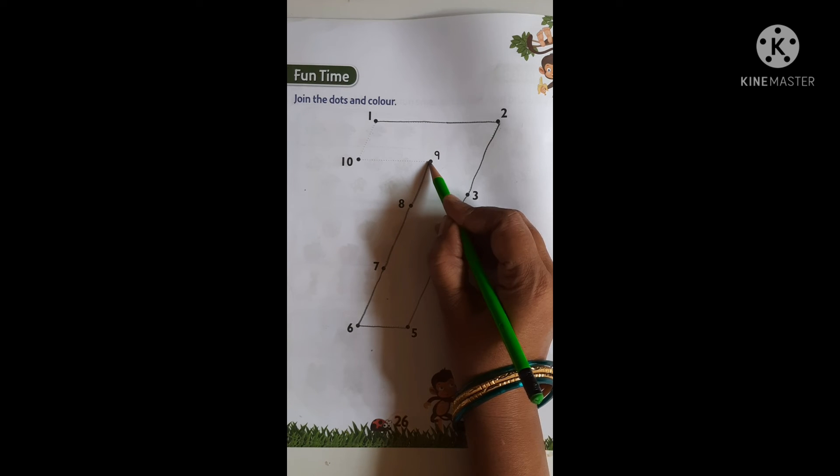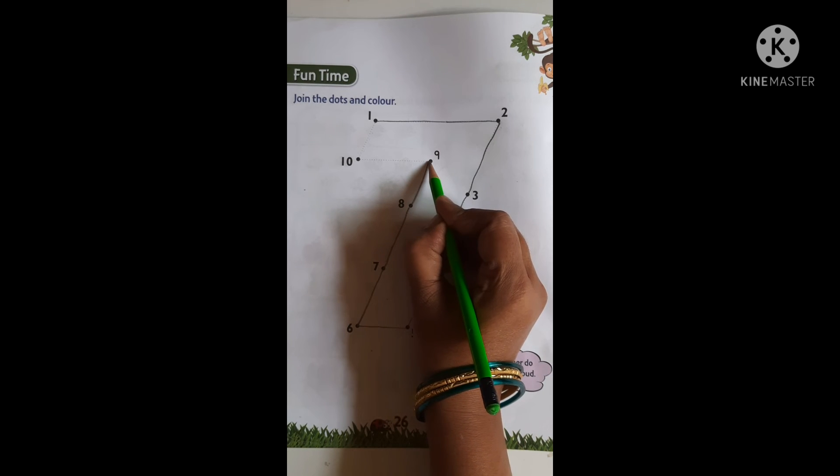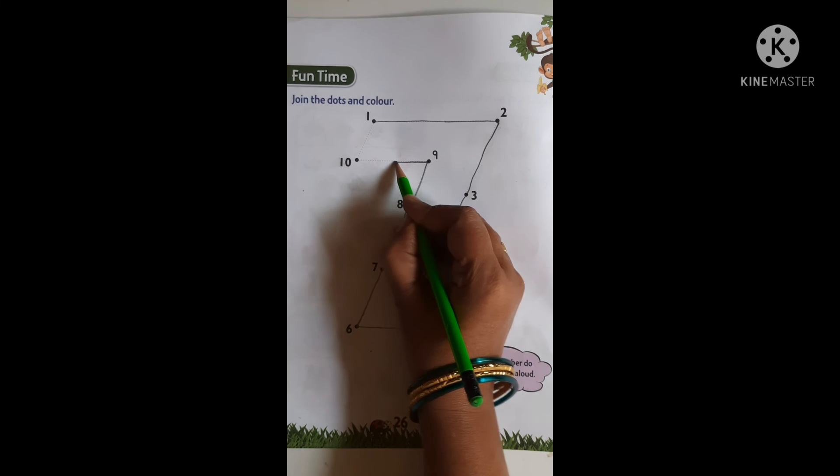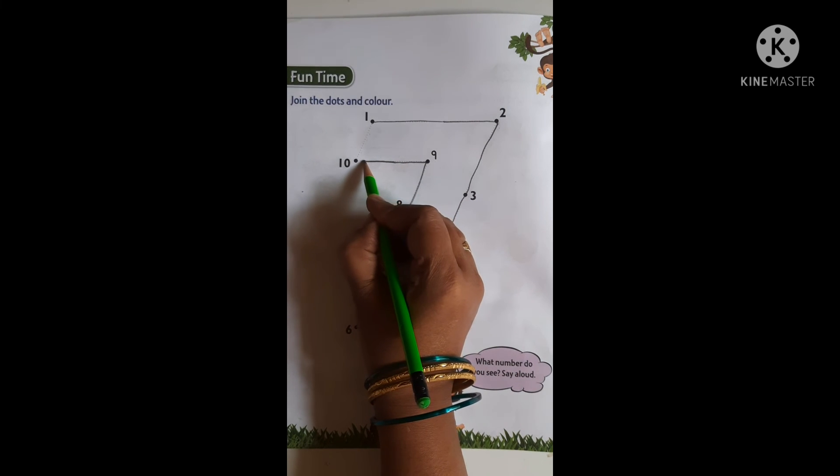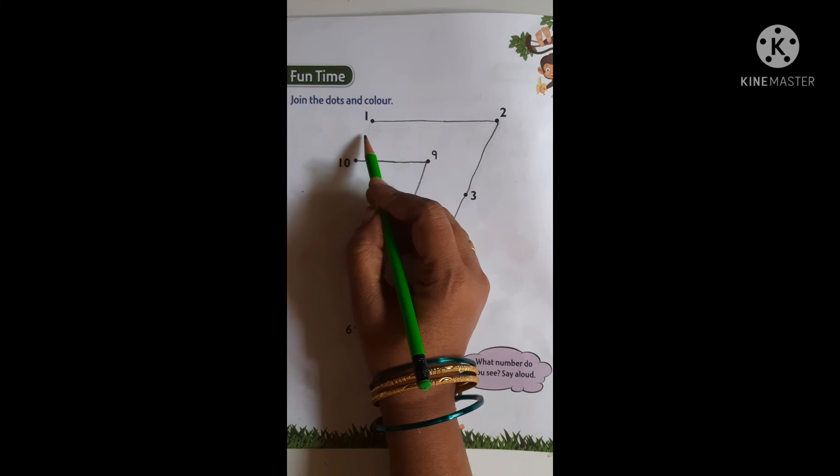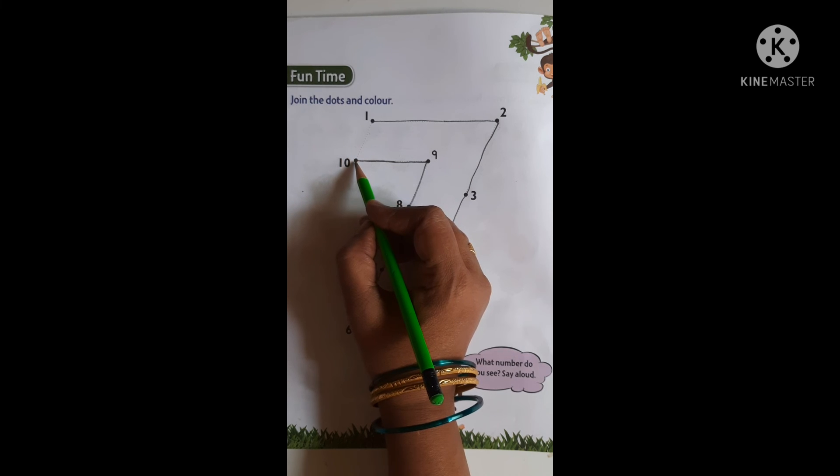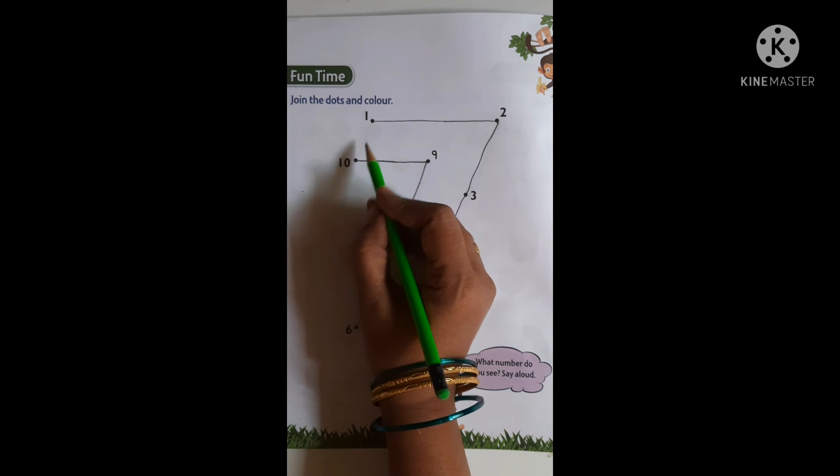Yes, one, zero, ten. Nine to ten. So, there is no number after ten. Kids, we are going to join number ten to the beginning point.